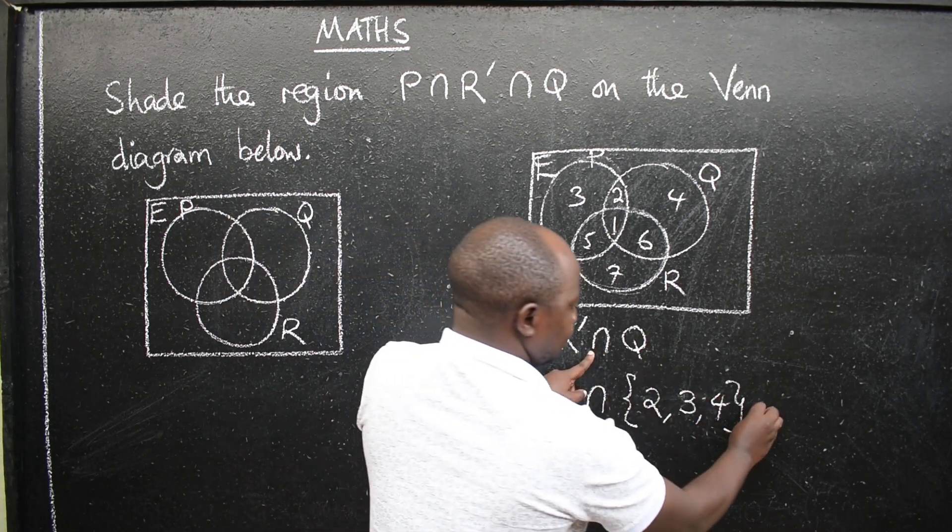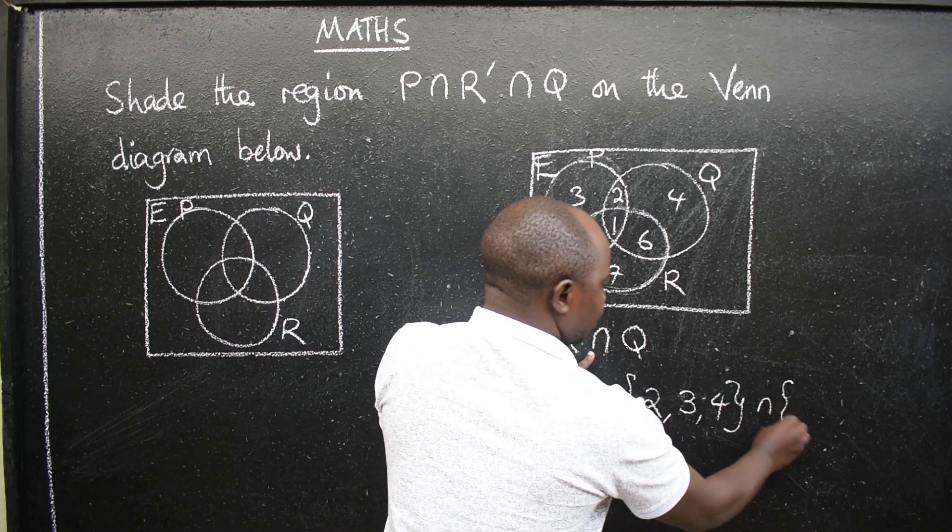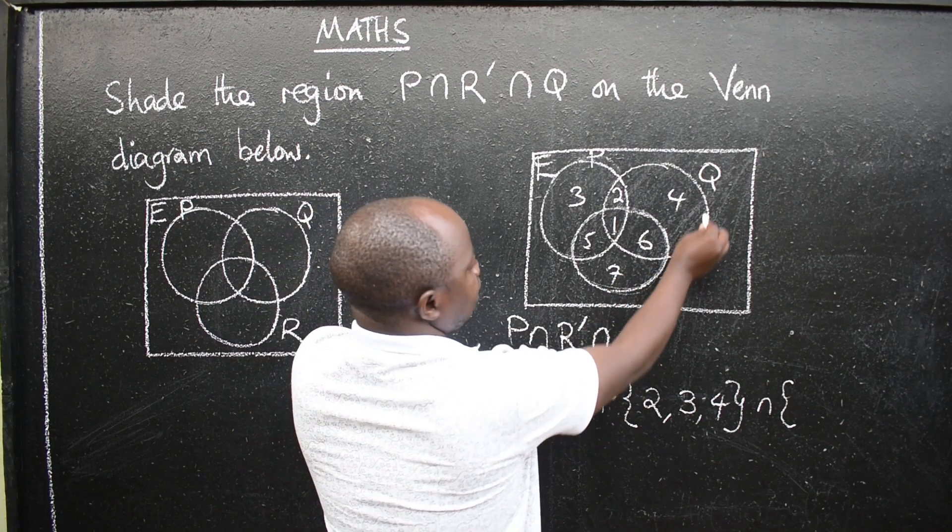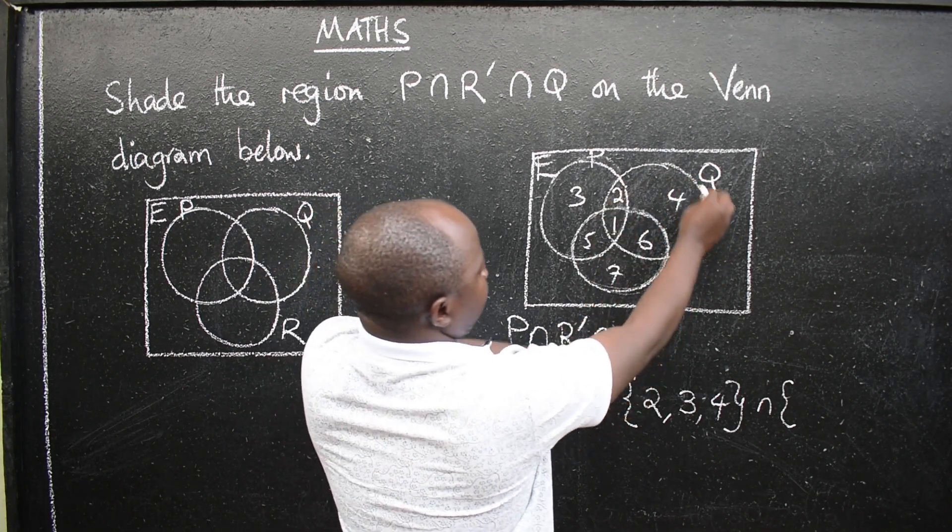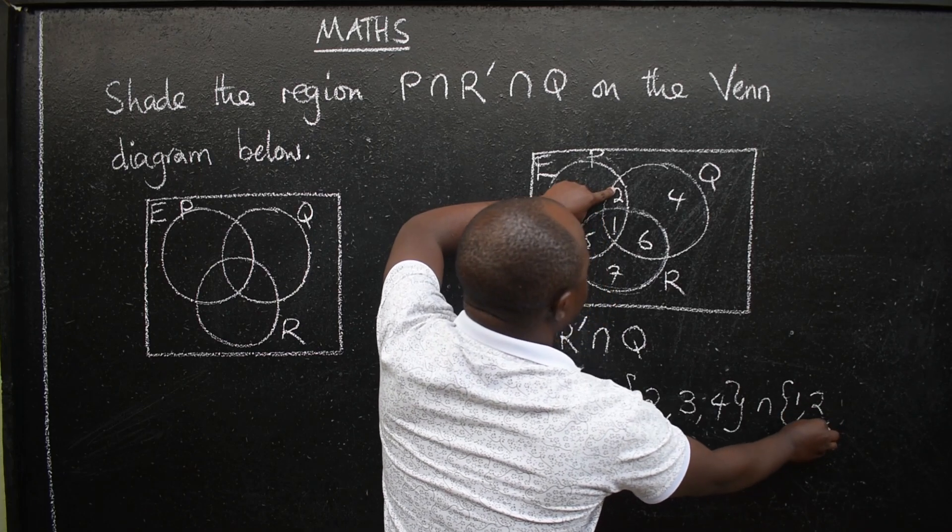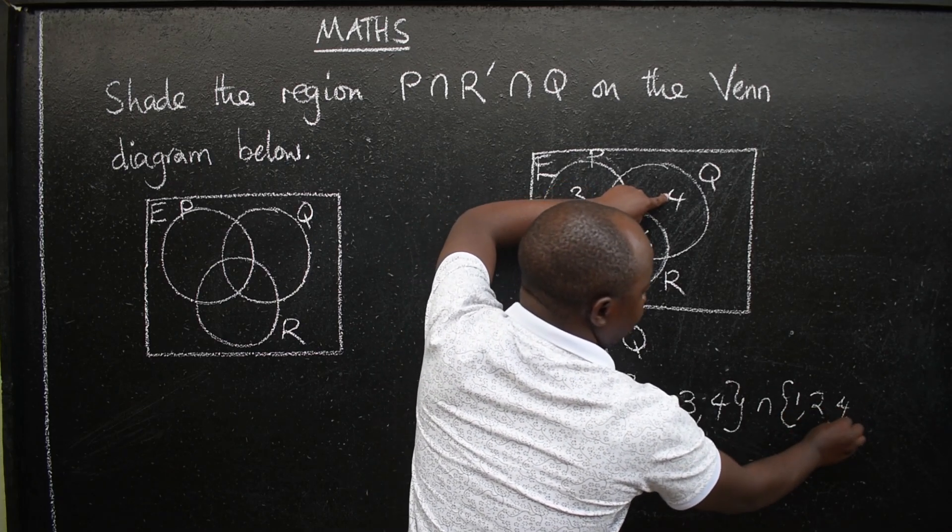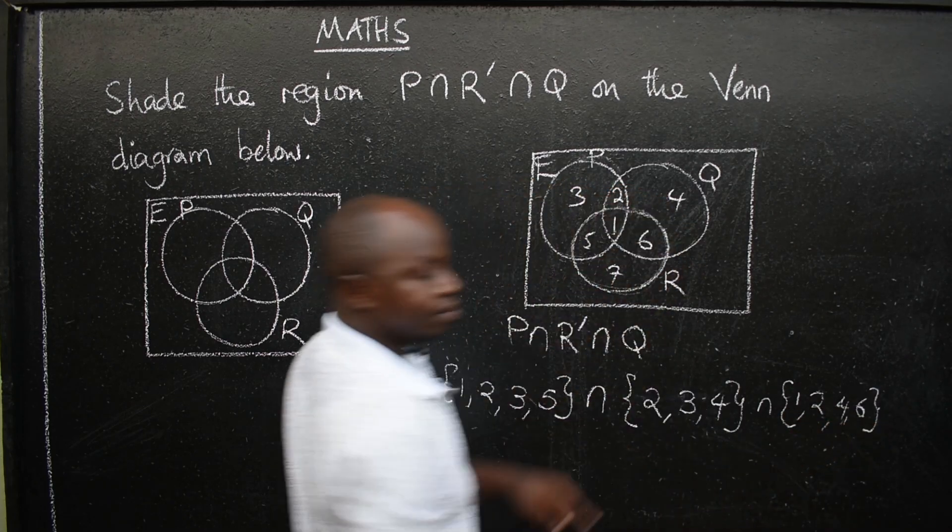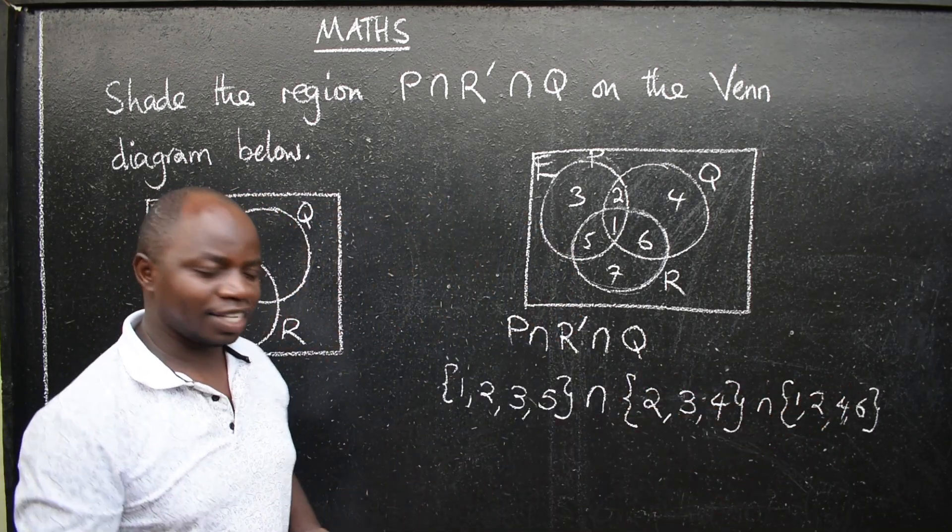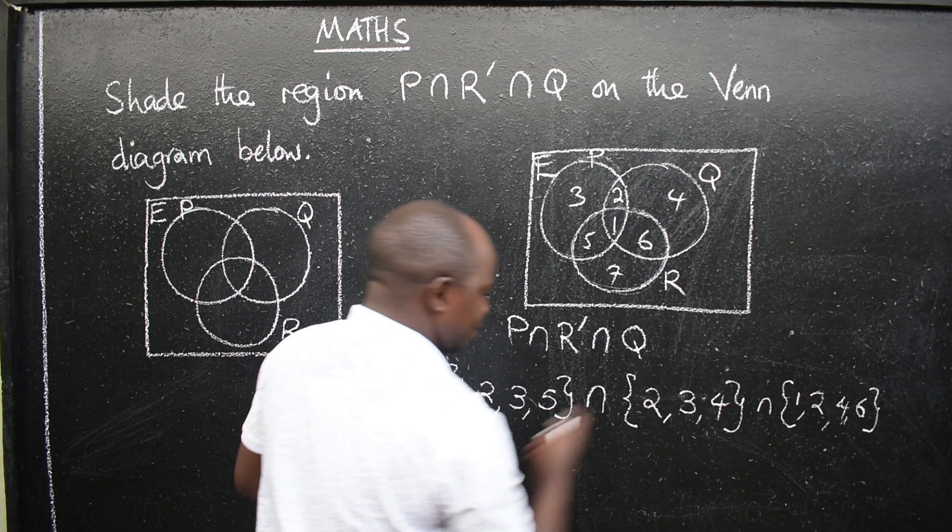Then intersection Q. This is set Q. So this is my set Q here, which has got 1, 2, 4, and 6. So we have substituted here. Then we need to understand these notations here.